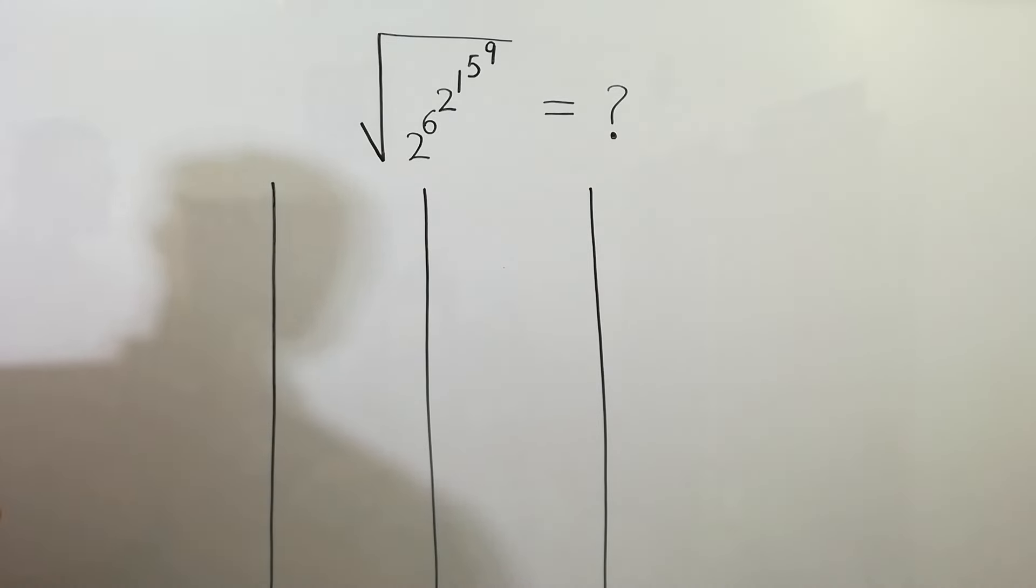in a short time, we let 5 to the power 9 equal y. We get 2 to the power 6 to the power 2 to the power 1 to the power y. Clear?